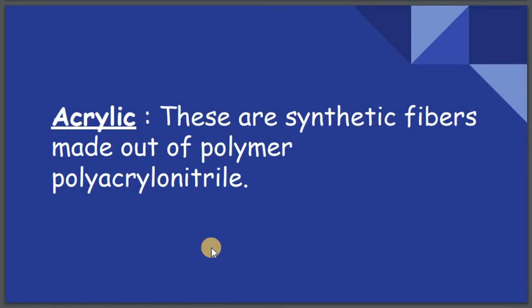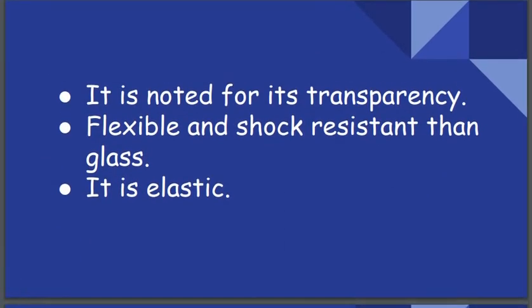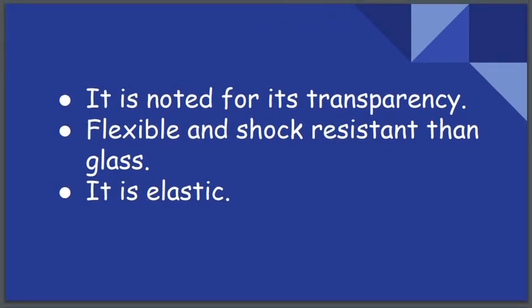Acrylic fibers are synthetic fibers made from the polymer polyacrylonitrile. Acrylic is noted for its transparency — similar to glass — but unlike glass it is flexible, shock resistant, and elastic, so it does not break. That is why acrylic is preferred over glass in many applications.